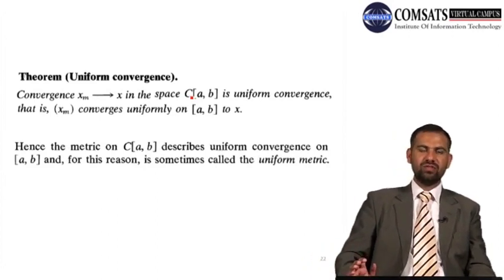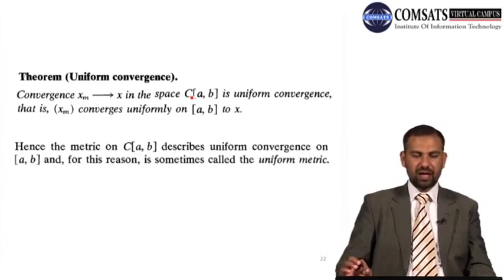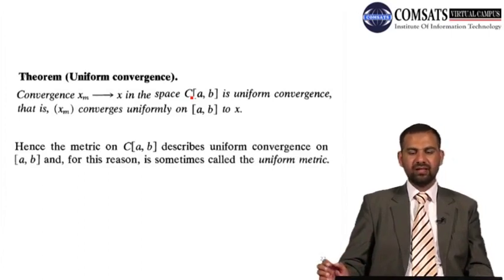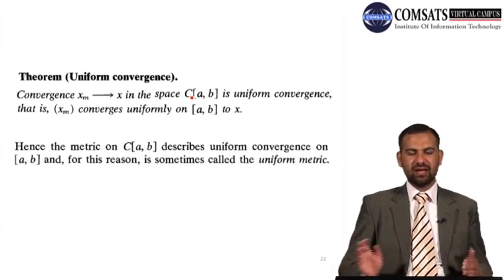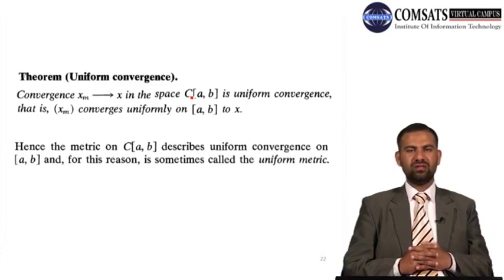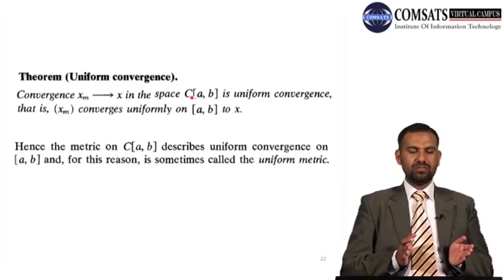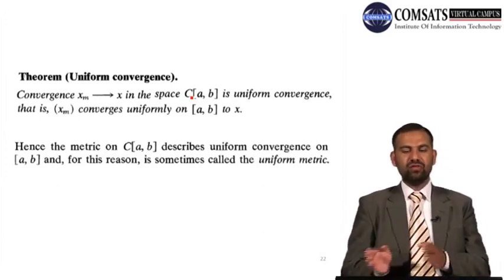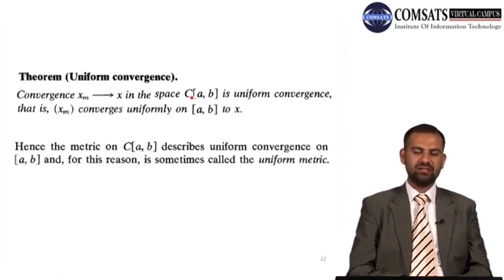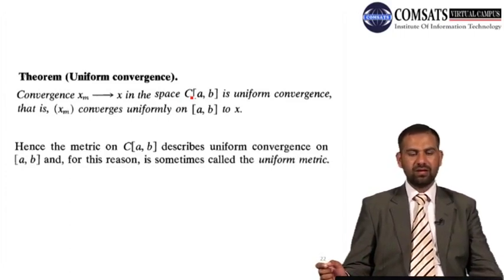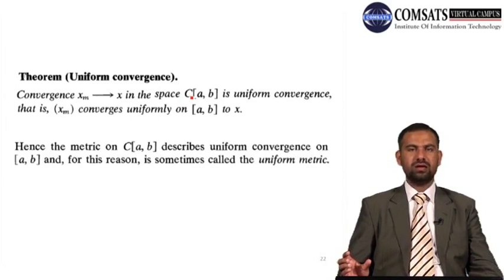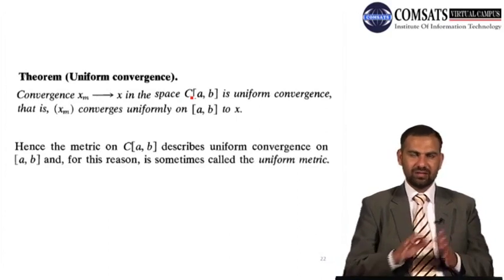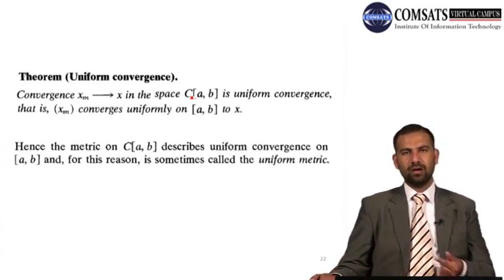Regarding uniform convergence: convergence x_m → x in C[a,b] is uniform convergence — that is, x_m converges uniformly on [a,b] to x. For every t in the closed set [a,b], each point converges pointwise. Hence the metric on C[a,b] describes uniform convergence on the closed set [a,b], and for this reason it is sometimes called the uniform metric.